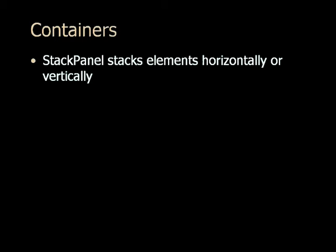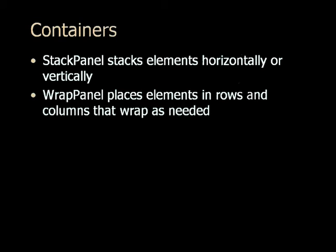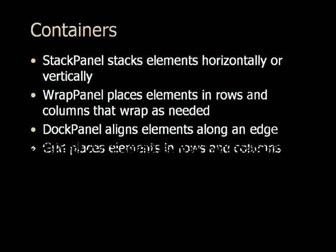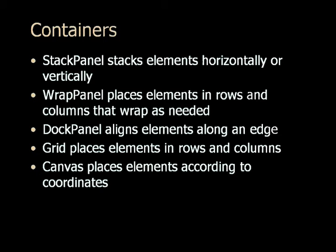There are five primary container elements you can use in XAML. Each window or page has one container, and inside that container you add elements such as text blocks, text boxes, and buttons. The stack panel stacks elements horizontally or vertically. The wrap panel places elements in rows or columns that wrap as needed when you resize the window. The dock panel aligns elements along one of the edges — top, bottom, left, or right. The grid places elements in rows and columns. And the canvas places elements according to coordinates, so they stay where you put them at runtime. If you use any of the other four containers, elements will resize and be repositioned.